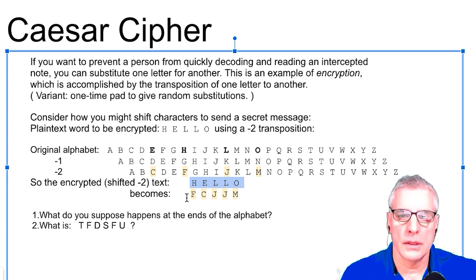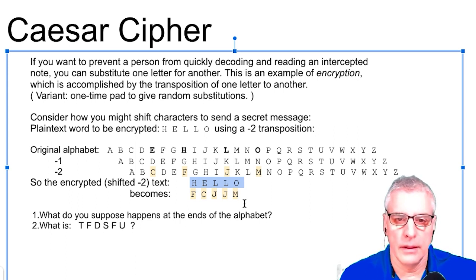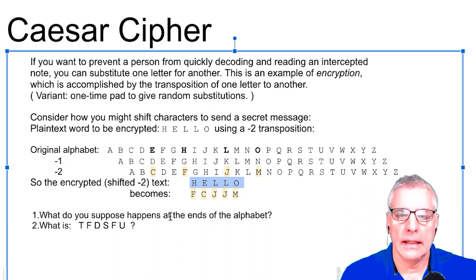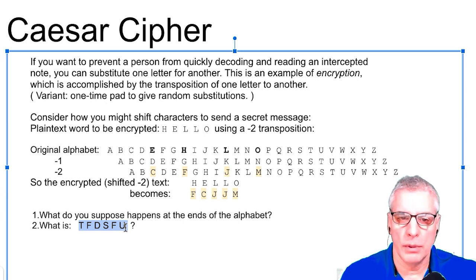And hello becomes F-C-J-J-M. F-C-J-M. I can't really pronounce it. So, you can think about what happens at the ends of the alphabet. And if you want, you could pause the video right now and try and decipher what would T-F-D-S-F-U be. And I'm not necessarily telling you if it's plus one, minus one, or what it is. Can you figure that out? So, I'll give you a moment to do that.